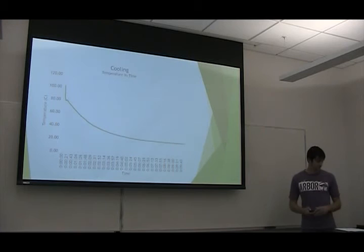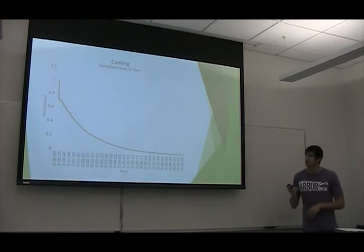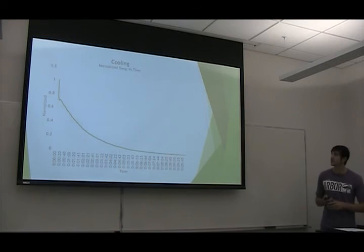This is, again, the normalized curve for cooling. It just, like I said, zero to one scale, and it kind of eliminates the outliers from dominating your graph. So we didn't really have any outliers on this experiment.